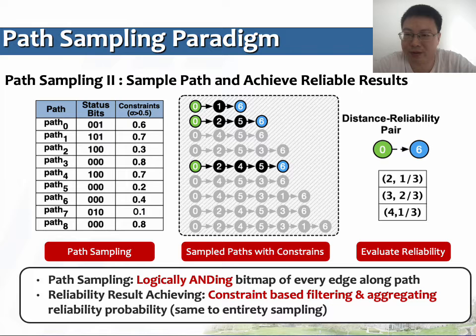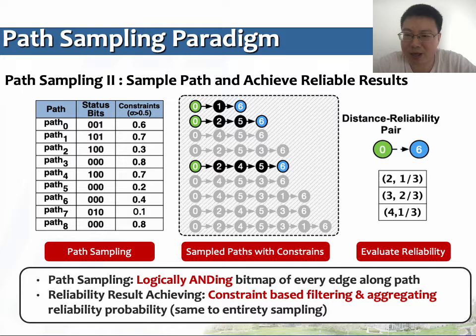The following two stages are conducted over identified paths and sampled edges. The third stage is path sampling, where a logical AND operation is performed over the bitmap of every edge along a path. A status bitmap is used for each path to represent its sampling result, indicating which possible worlds the path will exist in. The path bitmap is calculated by logical AND between the bitmaps of every edge on the path. For example, the bitmap of path 0 equals the AND of edge 0-to-1 and edge 1-to-6 bitmaps, which equals AND of 0,1,1 and 0,0,1, giving 0,0,1 for path 0.